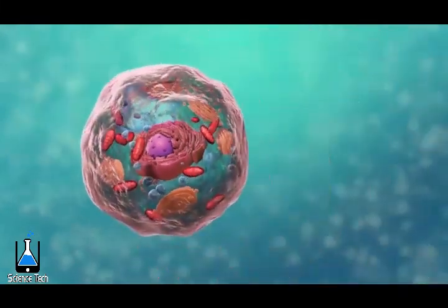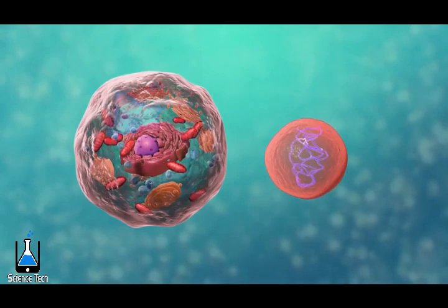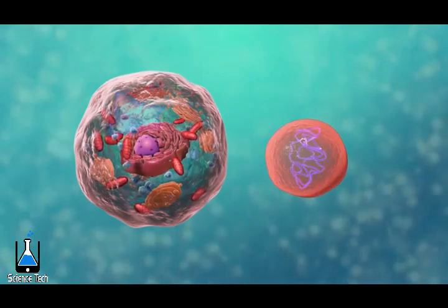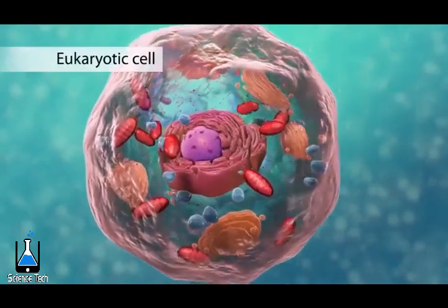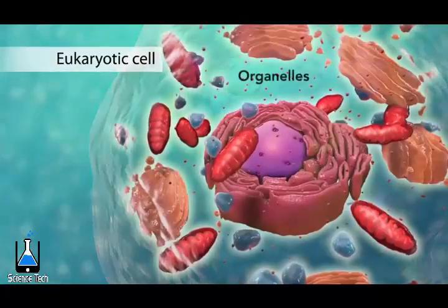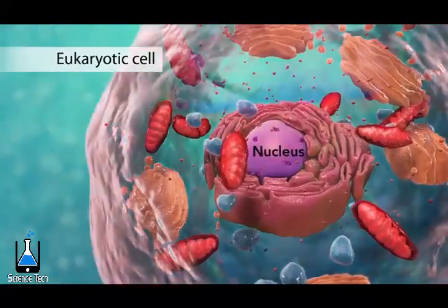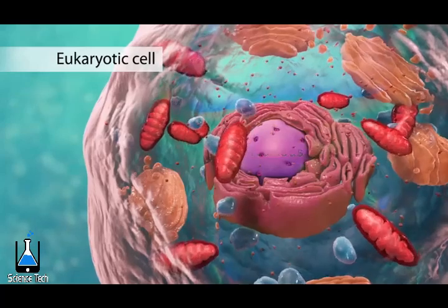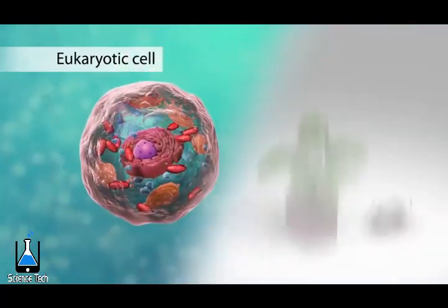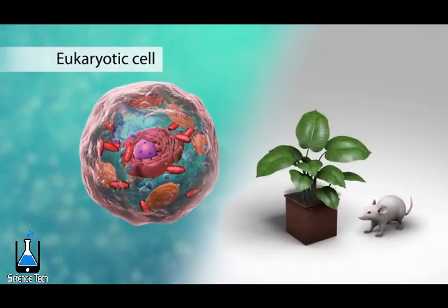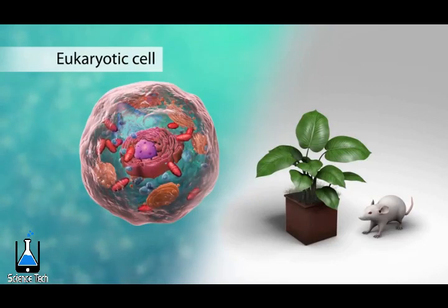There are two broad categories of cells. The first category is eukaryotic cells. They have organelles, which include the nucleus and other special parts. Eukaryotic cells are more advanced, complex cells, such as those found in plants and animals.